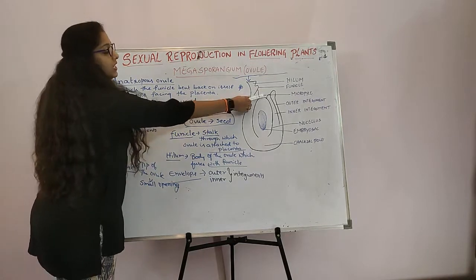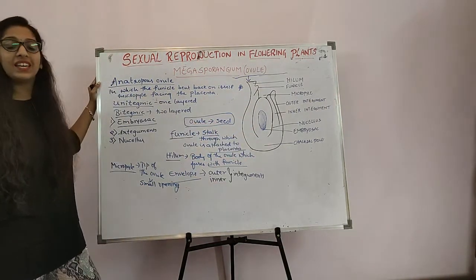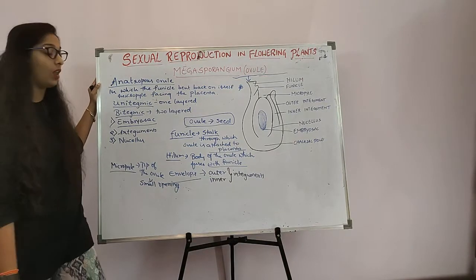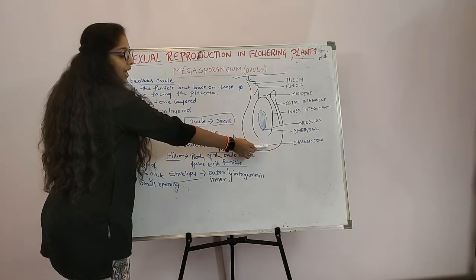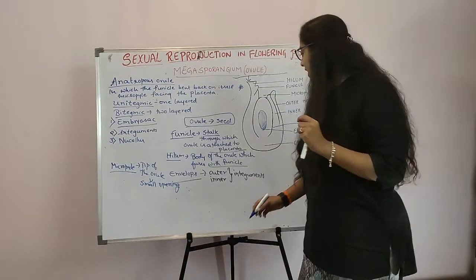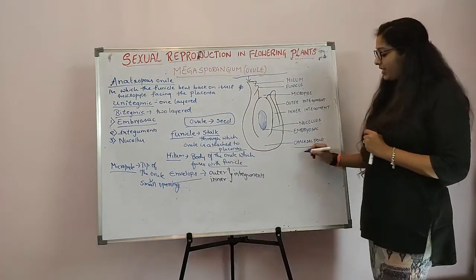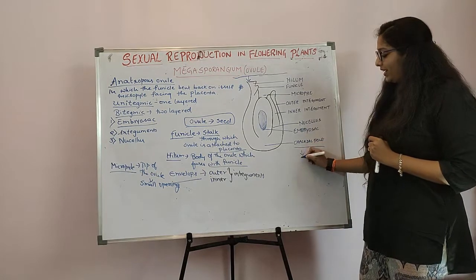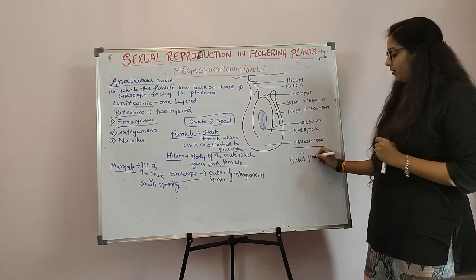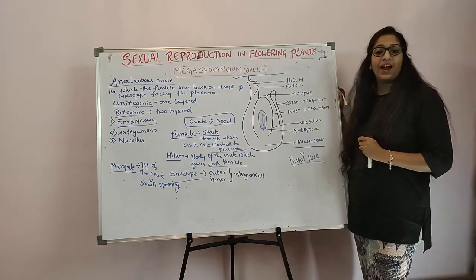Opposite to the Micropyle end is the Chalazal pole. This pole is known as the Chalazal pole. Chalaza represents the basal part of the ovule.